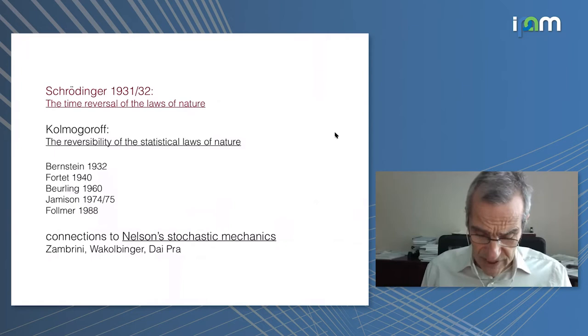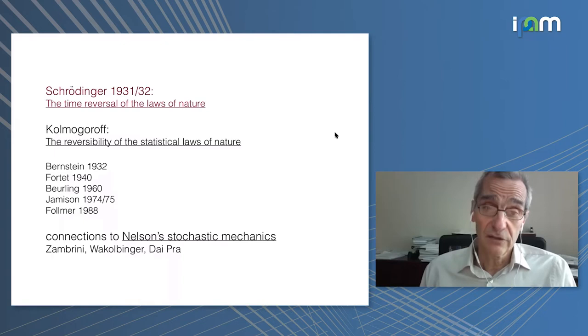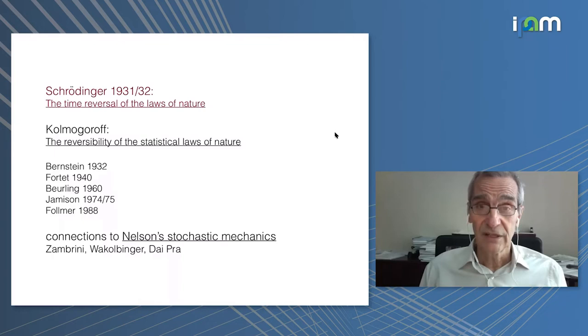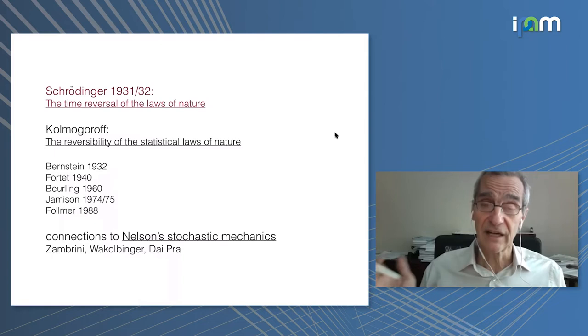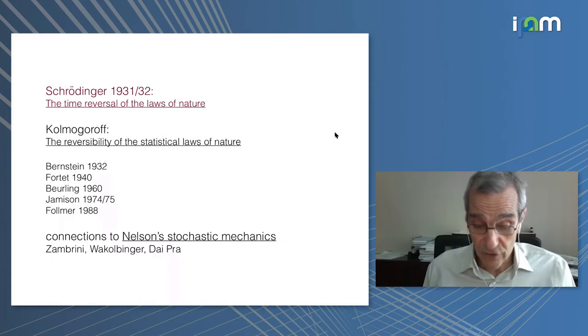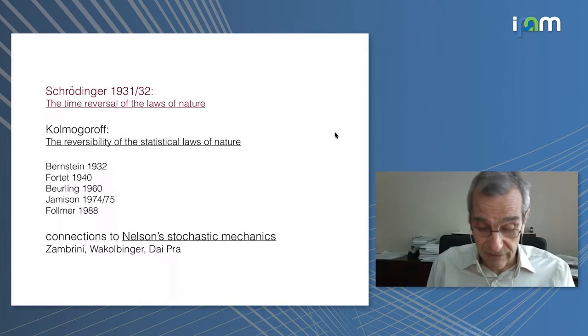Just briefly historically the subject starts in 1931-32. Erwin Schrödinger had a Gedanken experiment of a diffusion that is constrained at the two ends, the beginning and end of the time interval, and he was concerned about a classical interpretation of Schrödinger's equation. It's quite interesting and this is beautiful work. The title of his talk is The Time Reversal of Laws of Nature.